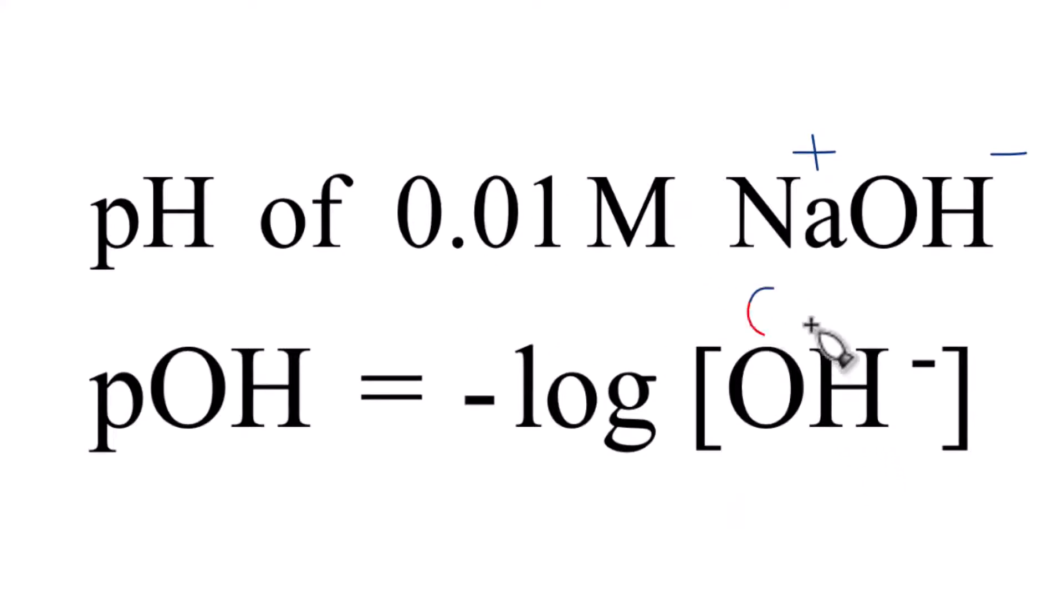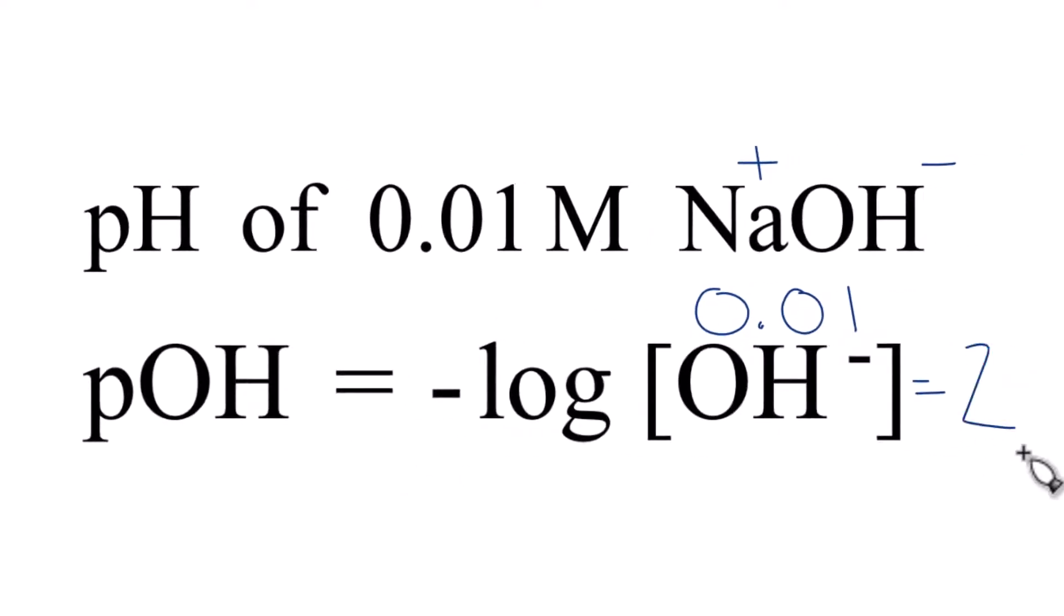We said that's 0.01. So if we take the log of 0.01, we get negative 2. But this negative out here, that'll cancel the negatives. Our pOH, that is 2.